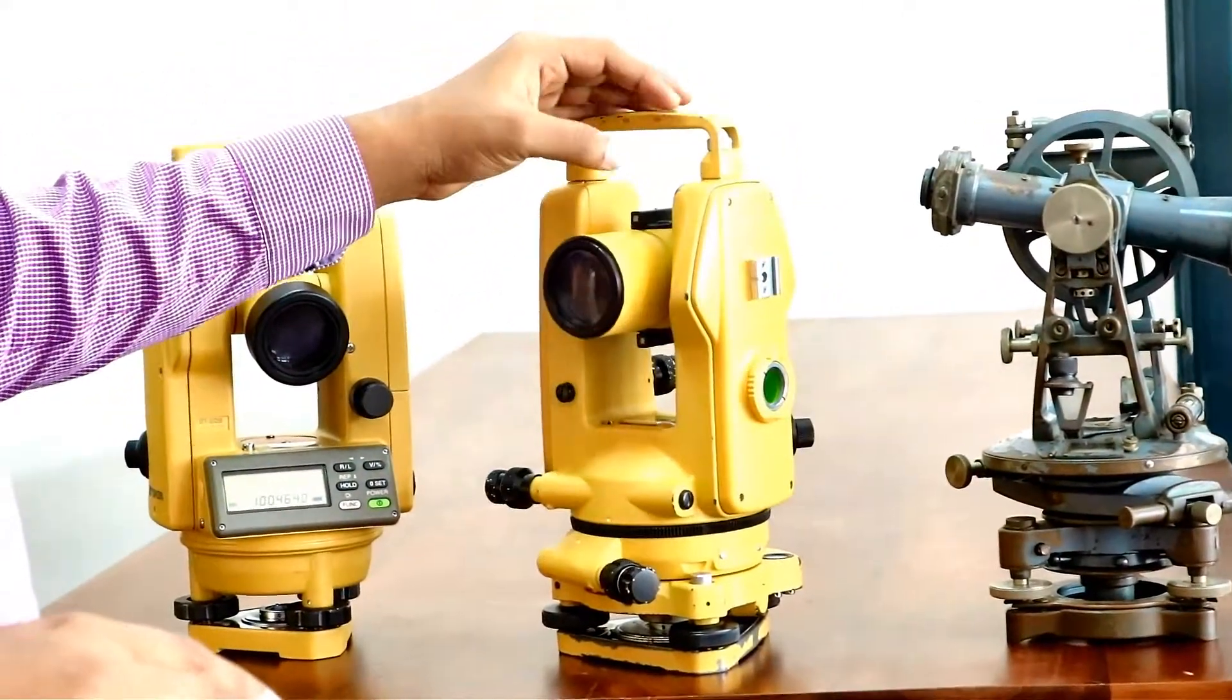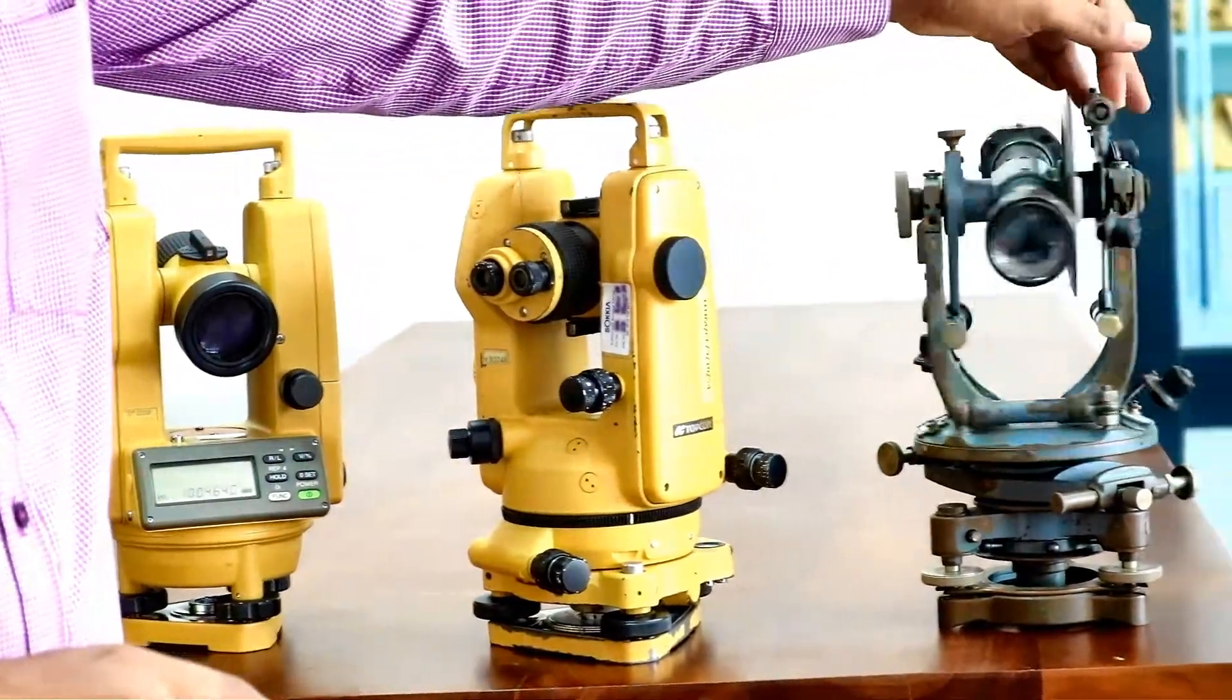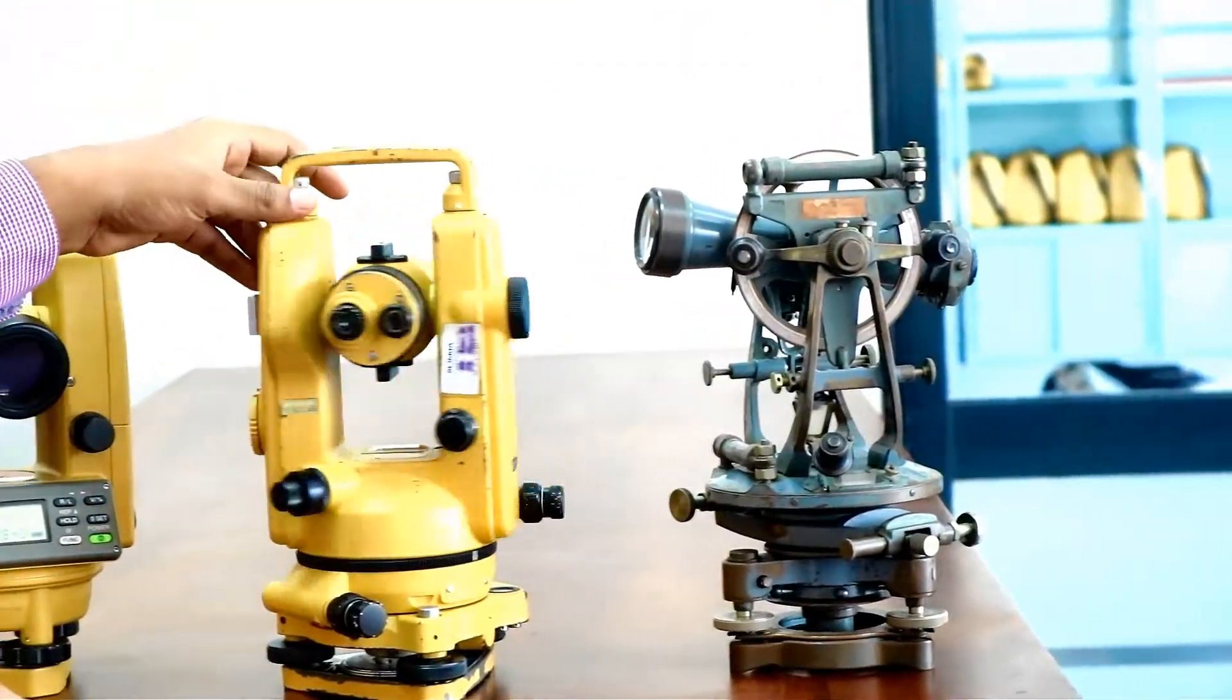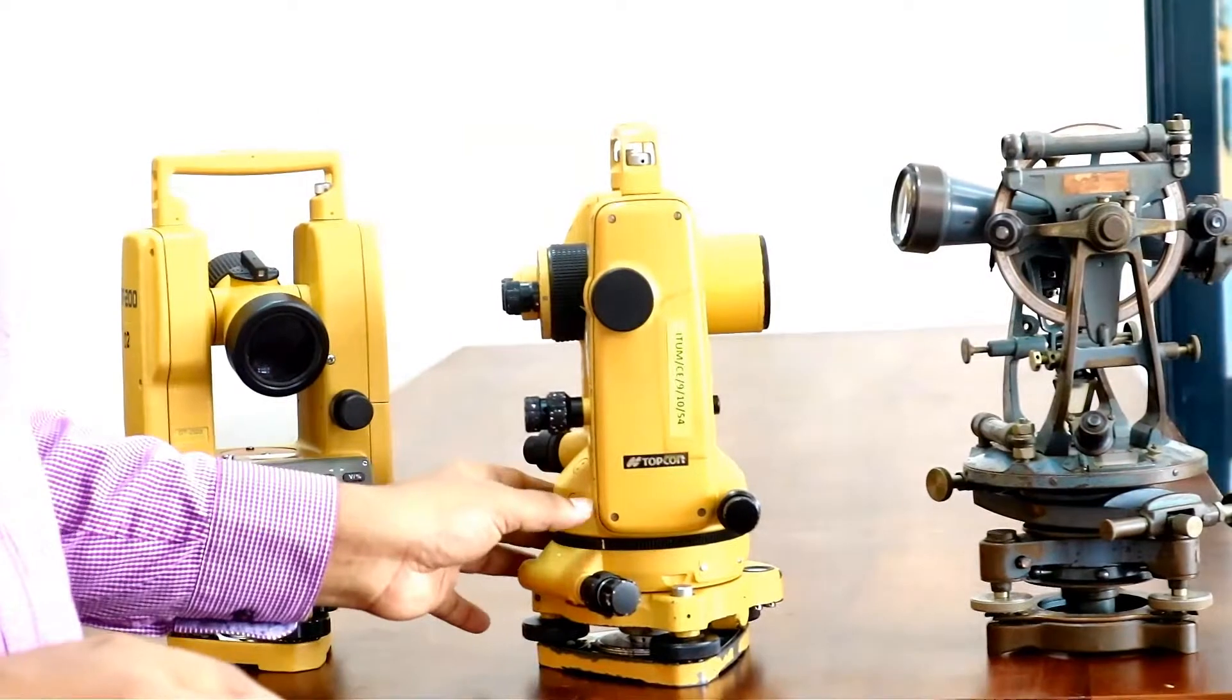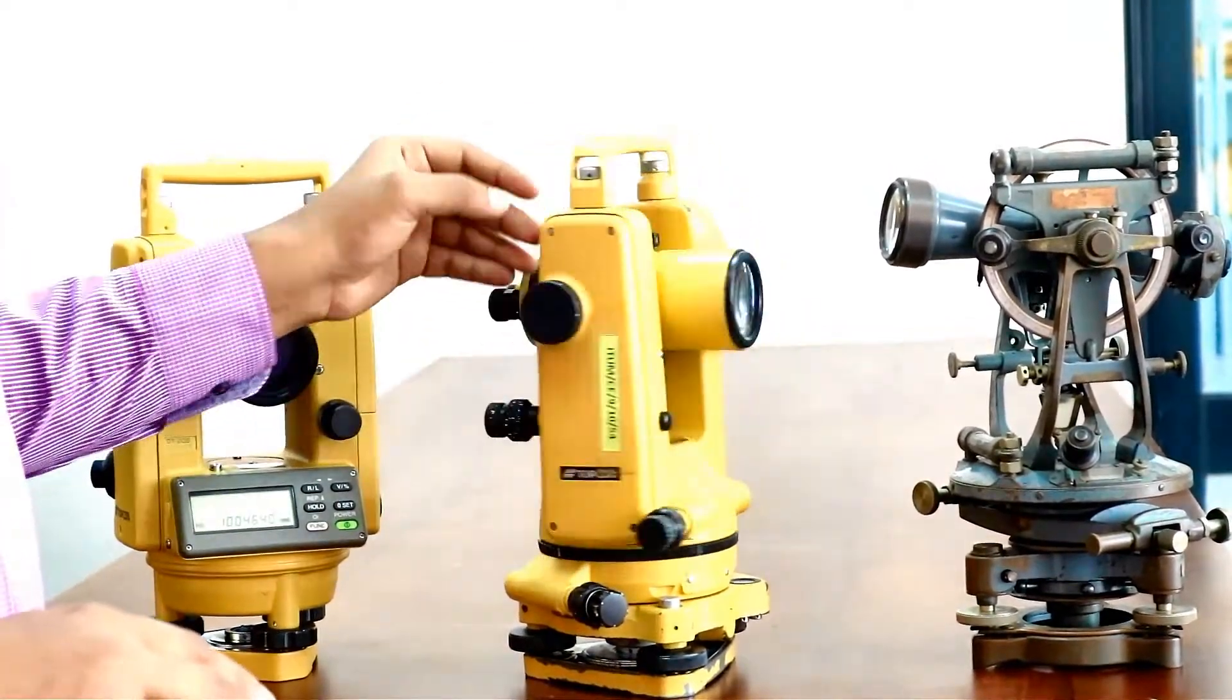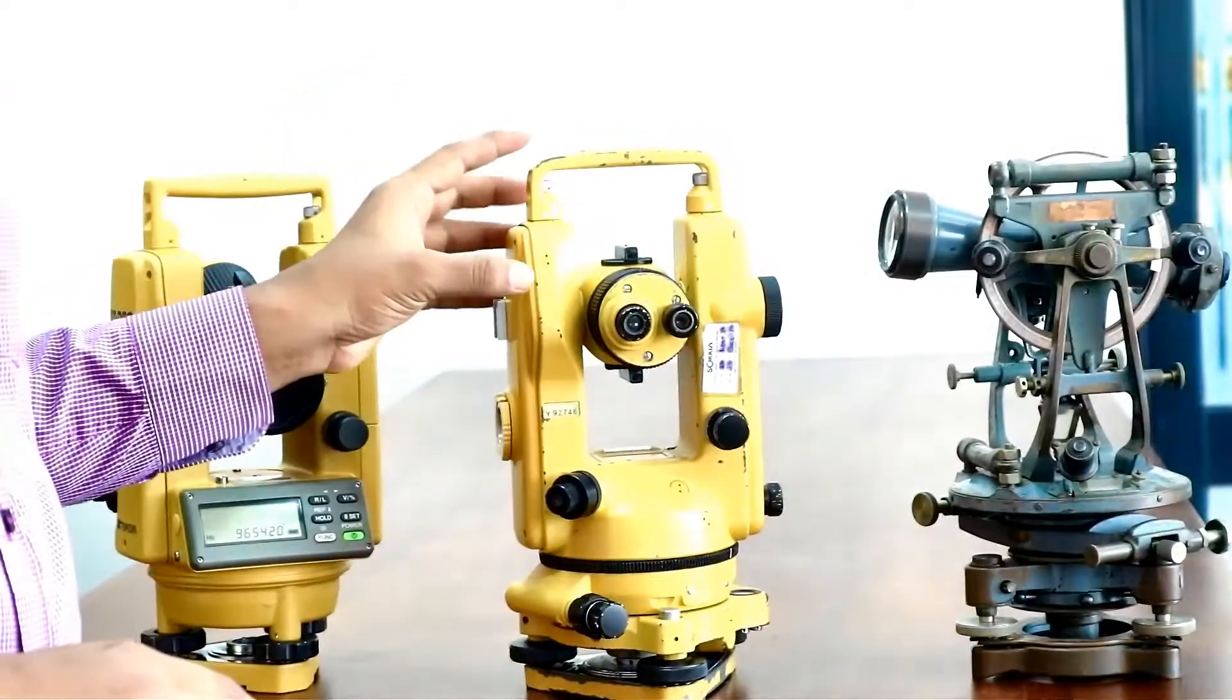There is a different mechanism. And unlike in the vernier transit theodolite and the vernier theodolite, you cannot see the vertical circles and horizontal circles from the outside. So all are in this case inside. And there is a different mechanism to measure the angles.